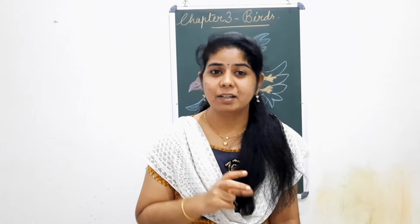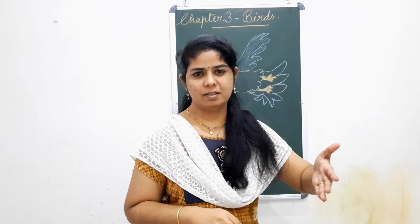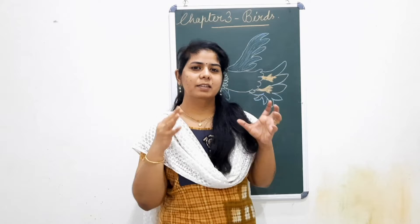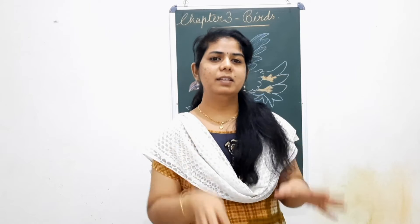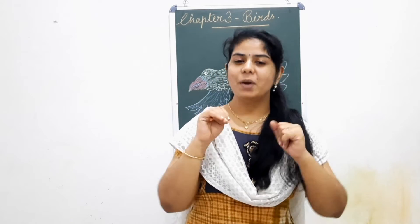Again we are coming to the third chapter. In this chapter we are going to learn about another type of living thing, which is different from animals and human beings. This living thing can do something animals and we cannot do — they are able to fly. So which living thing is that? They are the birds. Birds can fly, and they have wings to fly.